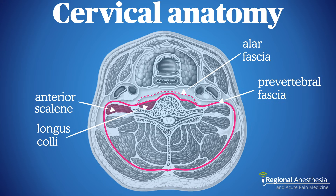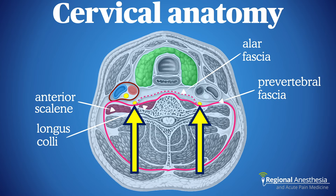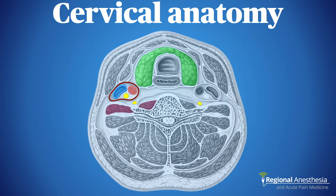Anterior to the scalene muscles is the carotid sheath with the internal jugular, the carotid artery, and the vagus nerve tucked in between. Anteriorly we have the thyroid gland enveloping the trachea and esophagus. The sympathetic chain lies anterior to the transverse process, resting between the prevertebral fascia and the carotid sheath.